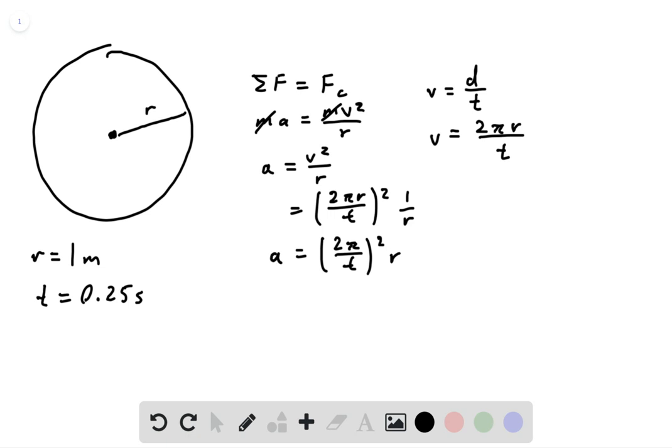By plugging in r and t, we get that the radial acceleration is about 623 meters per second squared for the toe of the ballerina.